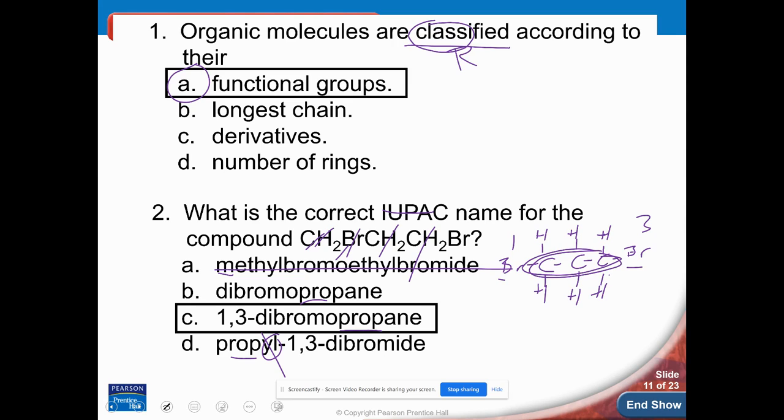All right. So, now that wraps up our halocarbon set of notes, according to using our table R. And so, our next set of notes, we're going to talk about some compounds that contain oxygens.